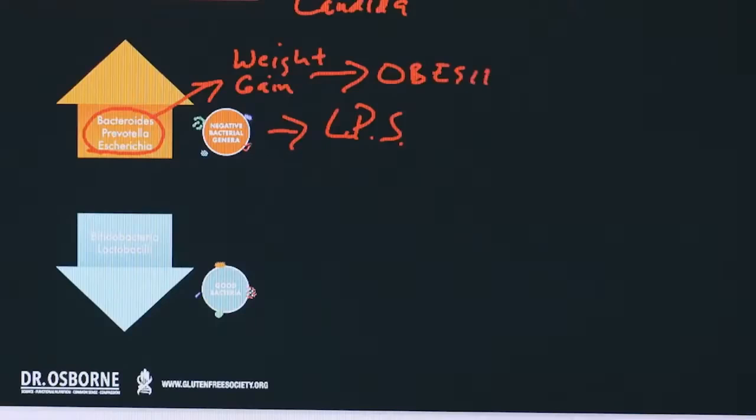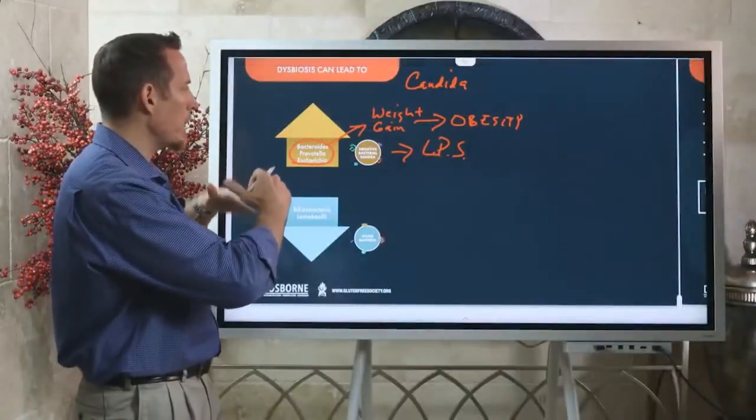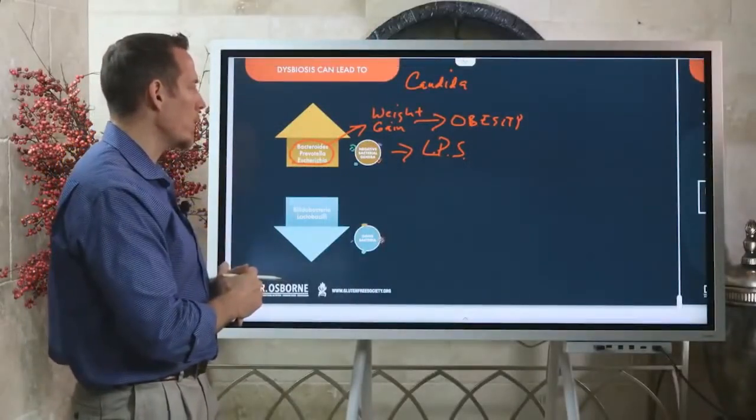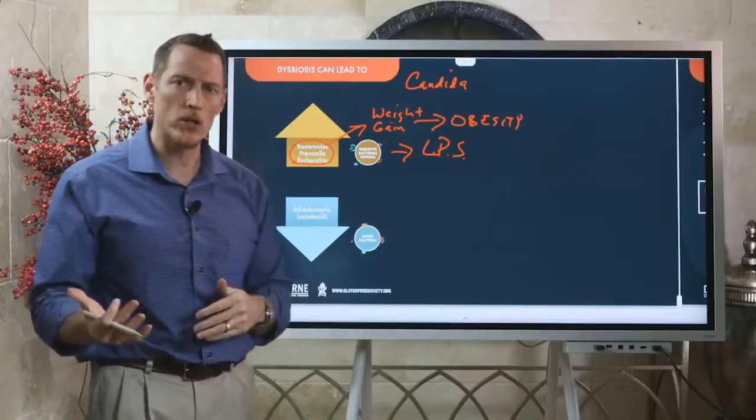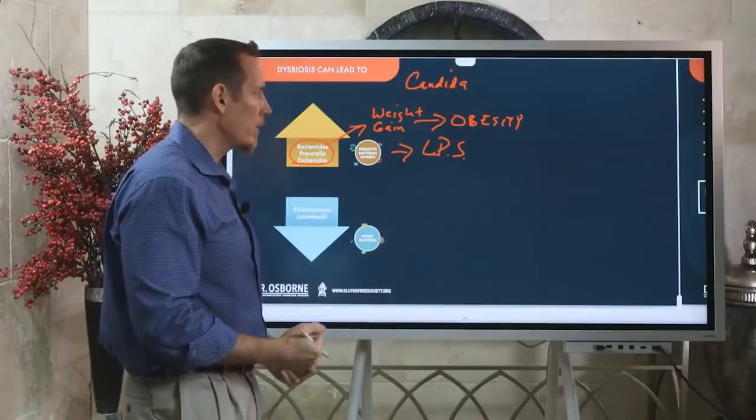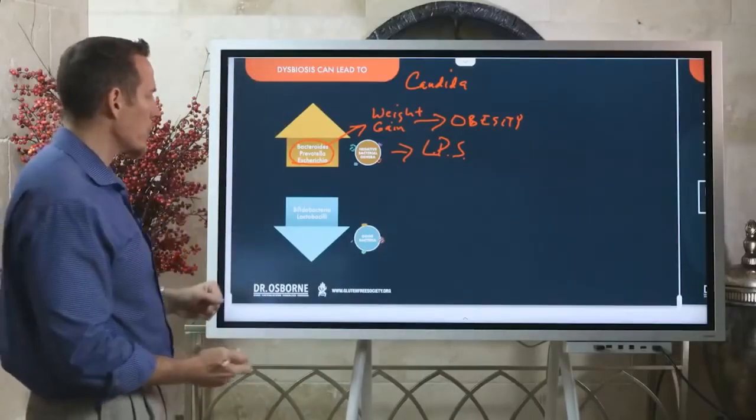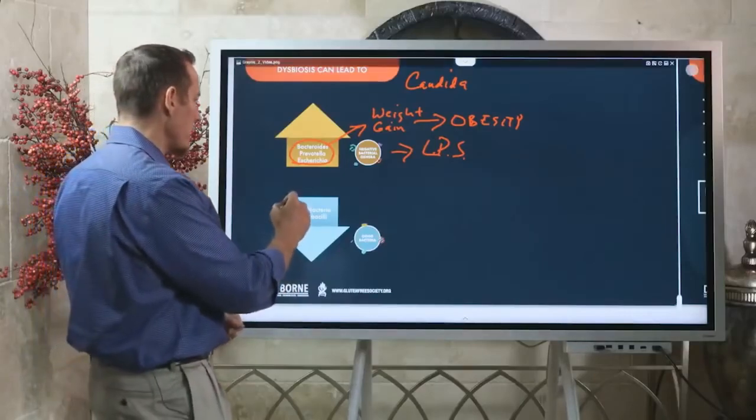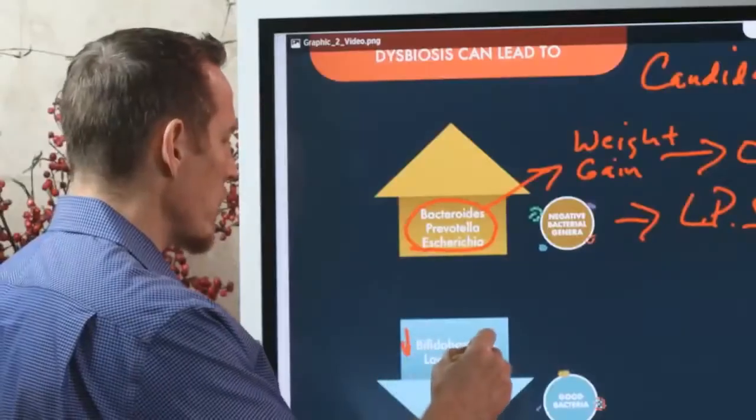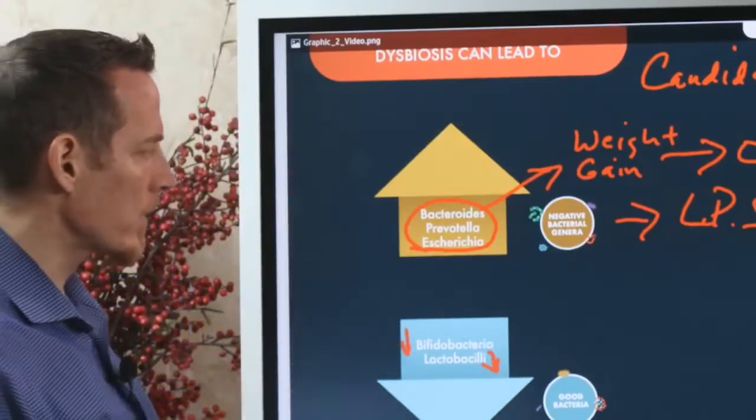In their adult life, as a result of the abnormal bacterial quantities, we're creating an imbalance of the different species that would otherwise help us utilize energy effectively. Now we're storing weight in the form of obesity instead of using that. We also see with the dysbiosis we can have some of the better species—I shouldn't say better, that's the wrong word choice—some critical species: Bifidobacter and Lactobacilli.